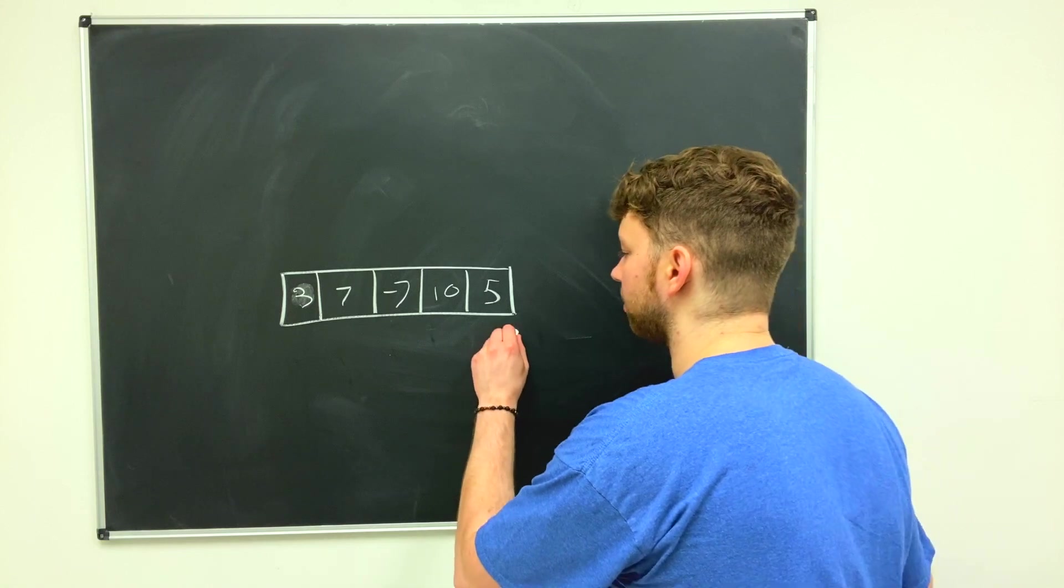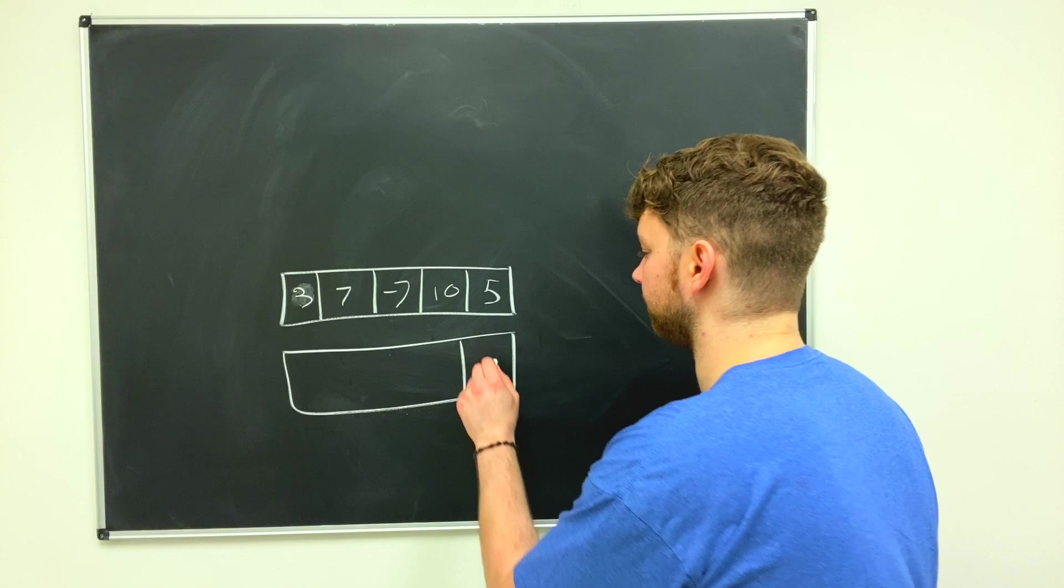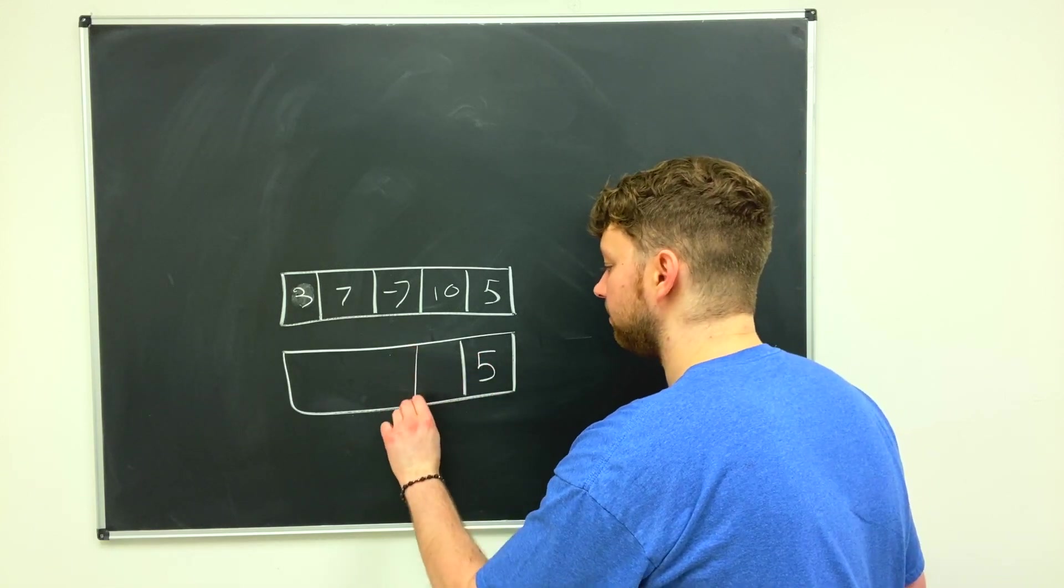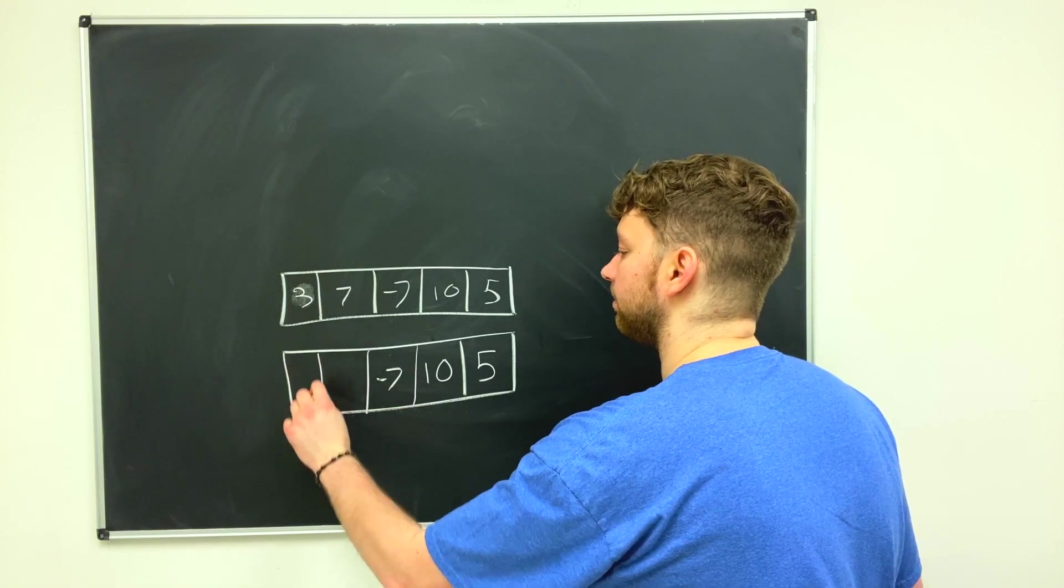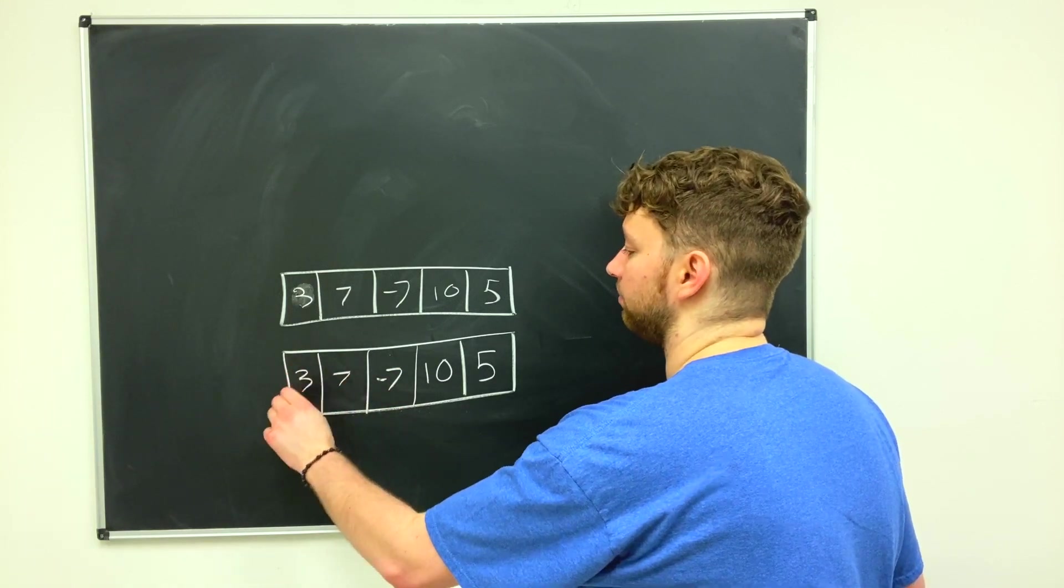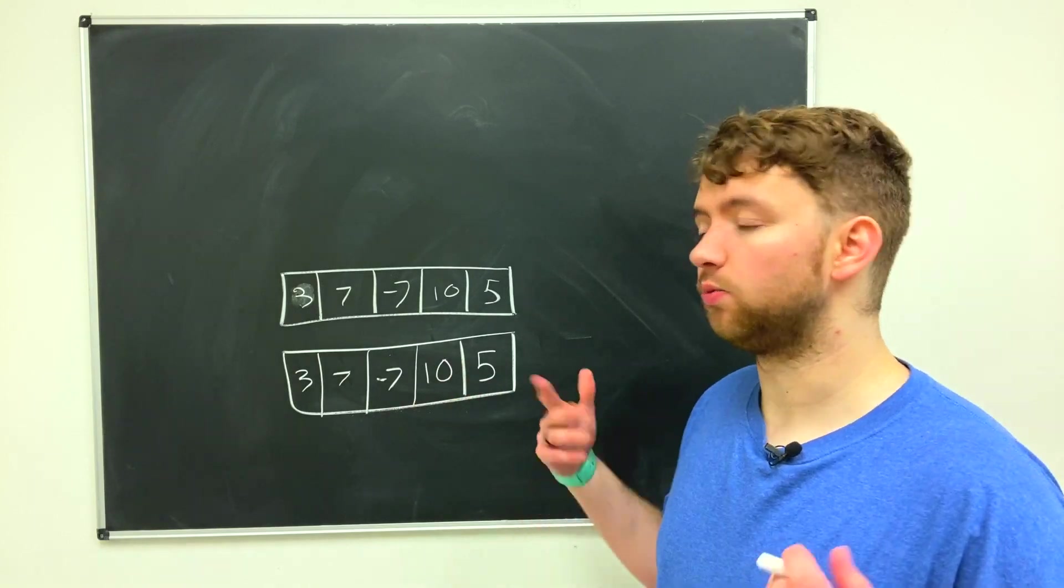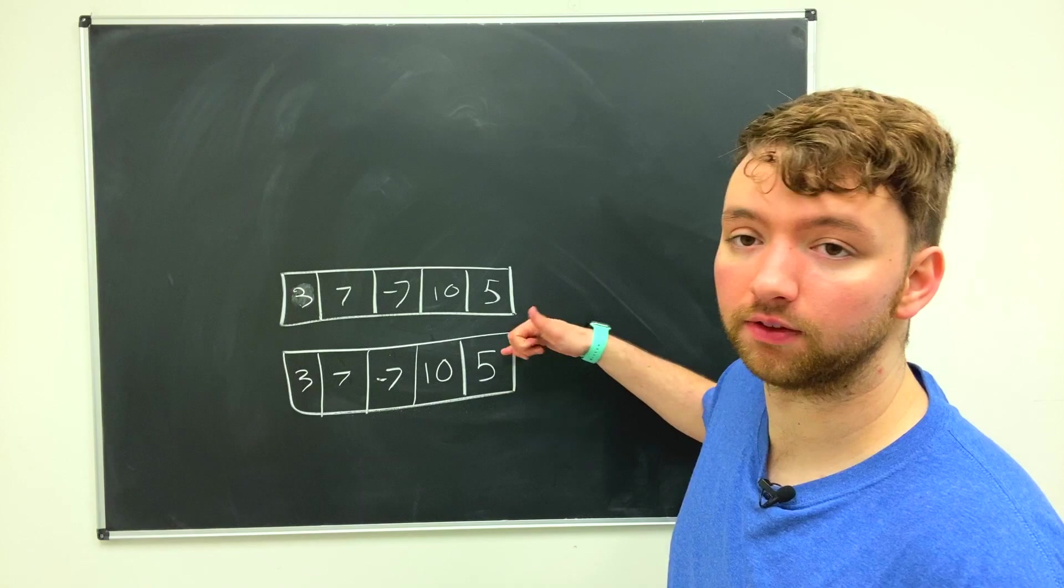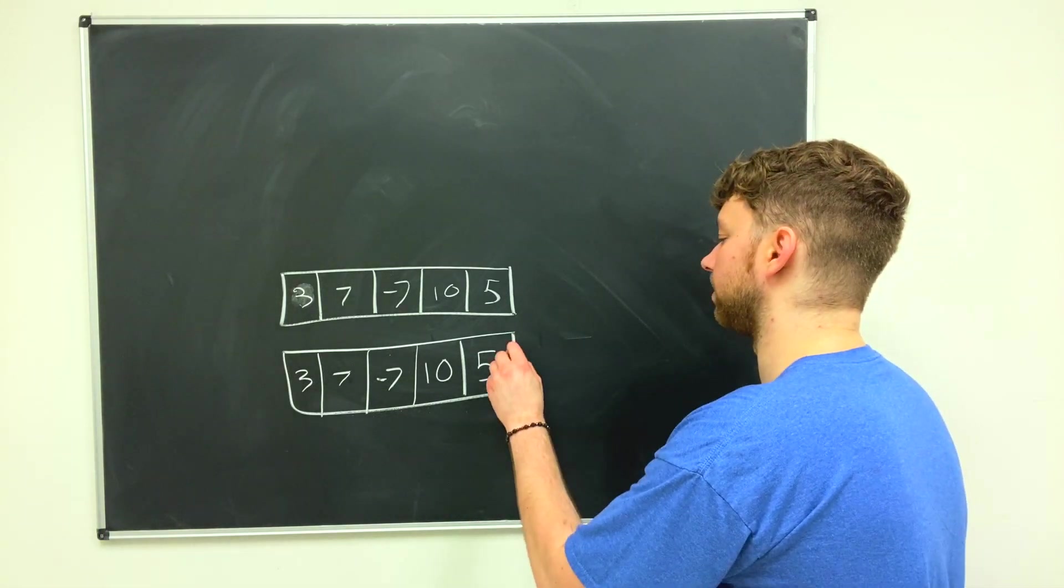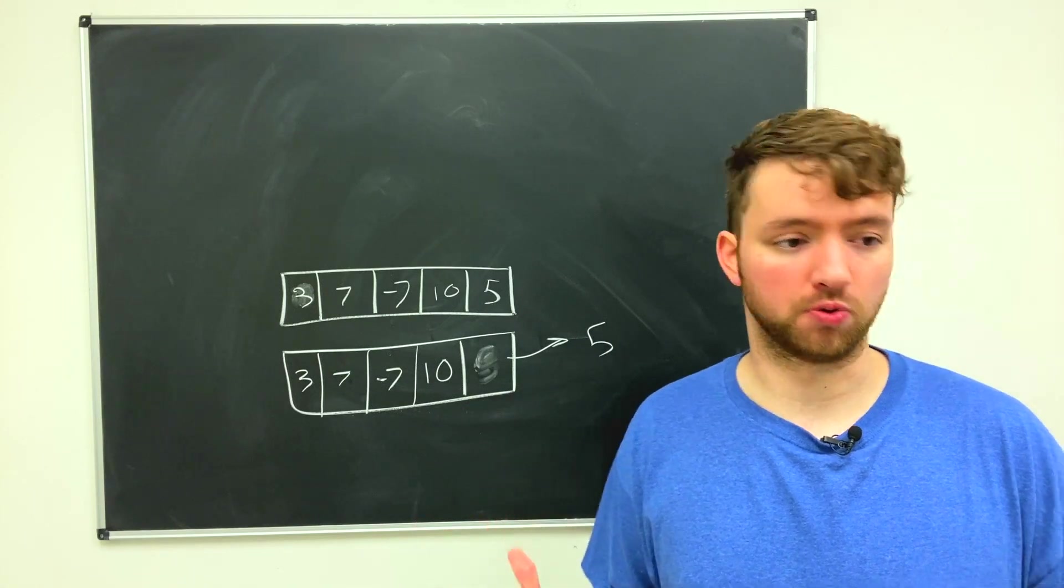How would we actually fill this collection? We would start at the right and one element at a time we would add it to this collection. We would add five, we would add ten, we would add negative seven, we would add seven, and then we would add three. If we wanted to remove data, which side is it going to come out? The first one added in, this one over here. So that one's going to be the first one out. So it's going to go out this way. So that is how a basic queue structure works.